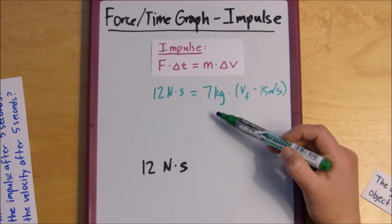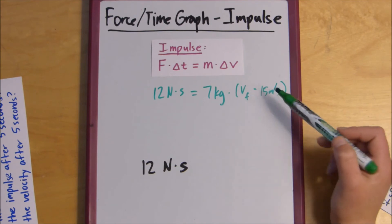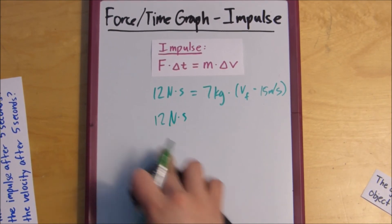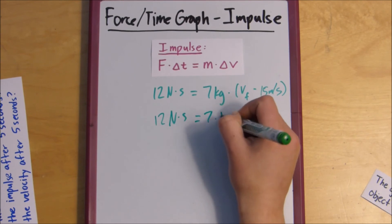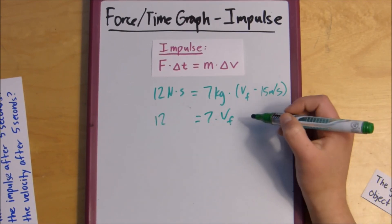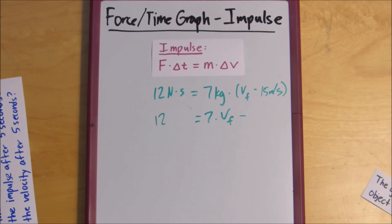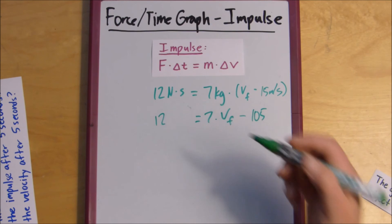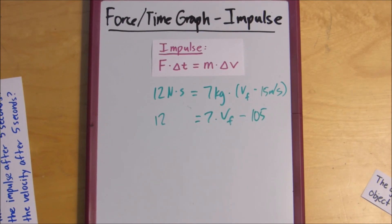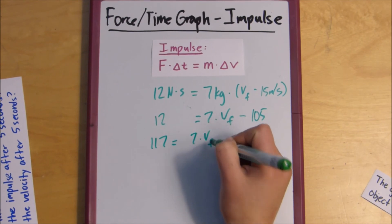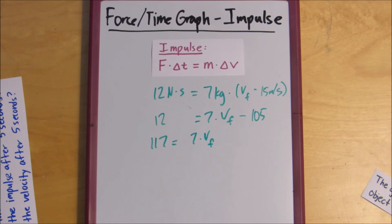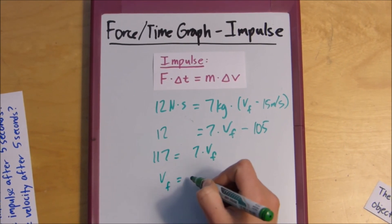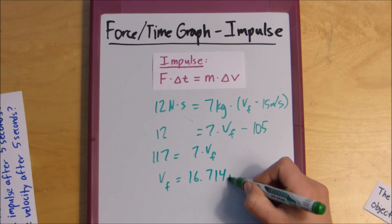So, what we can do is we can distribute this 7, and multiply velocity final times 7, and 15 times 7. Equals 7 times velocity final minus 105. And then we add to the other side, we get 117 equals 7 times v final, then we divide by 7, this number divided by 7, and we get v final equals 16.714 meters per second.